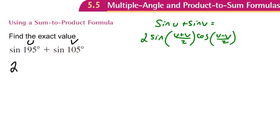So that means we'll get 2 sine of 195 degrees plus 105 degrees all over 2. So all it is, as I plugged in 195 for U and 105 for V, all right?